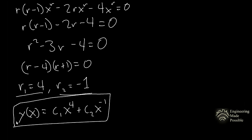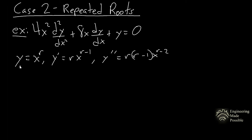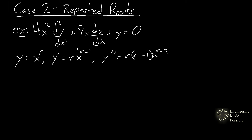Now let's do an example for case two — repeated roots. The equation is 4x squared times the second derivative of y, plus 8x times the first derivative of y, plus y equals zero. As before, assume y equals x to the r, get the derivatives, and plug into the equation. Substituting gives: 4x squared times r(r minus 1) times x to the (r minus 2), plus 8x times r times x to the (r minus 1), plus x to the r, equals zero.